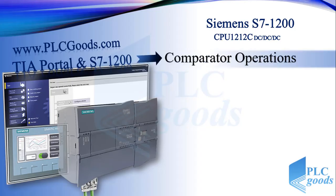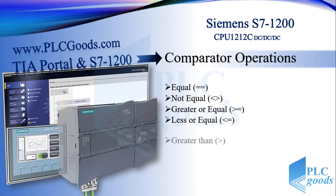Hello, in this video we're going to learn about comparator operations. These instructions perform a comparison of two values with the same data type. The first instruction is equal, it has a double equal sign, then we have not equal, which means a number is greater or less than another number.